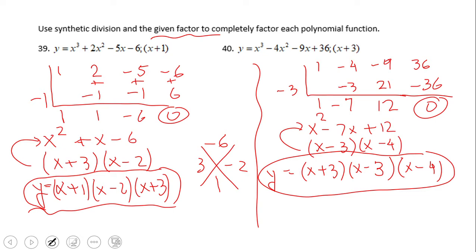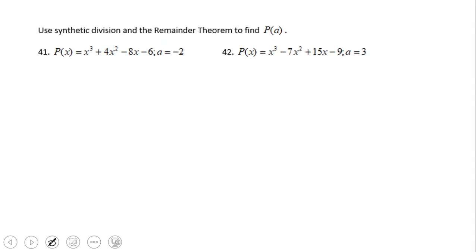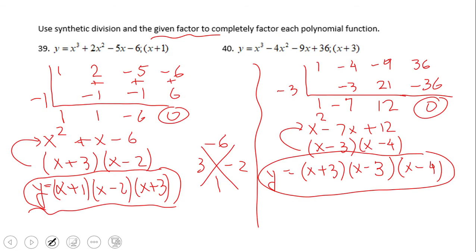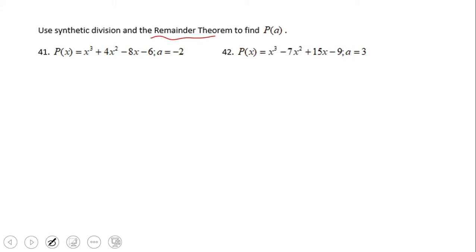If you got that answer for number 40, then you did a wonderful job. Now let's take a look at the Remainder Theorem. We use synthetic division and the Remainder Theorem to find P(a). By the way, if we go back and plug in any of the zeros — x equals negative one, x equals two, x equals negative three — into the polynomial, y would be zero. You can double check that, and the same applies for number 40.